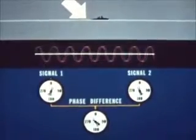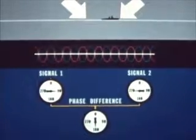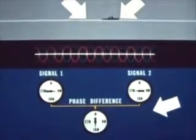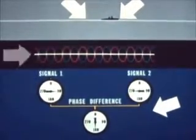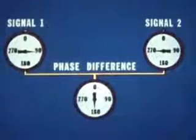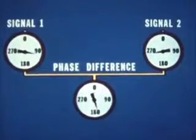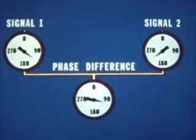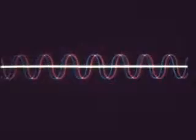As the receiver begins moving toward one station and away from the other, we begin to get a phase difference due to the difference in distance the signals travel. In our simplified receiver, you can see this phase difference being measured. The sine waves simply show the changing phase difference graphically.